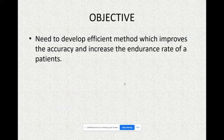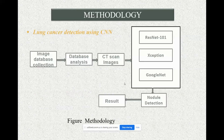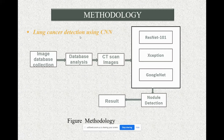My objective is to develop an efficient method which improves accuracy and increases the endurance rate of a patient. The methodology involves: first, database collection; then database analysis; then CT scan images are passed through three networks — ResNet-101, Xception, and GoogLeNet — after which nodule detection is performed. The results are discussed in the further slides.